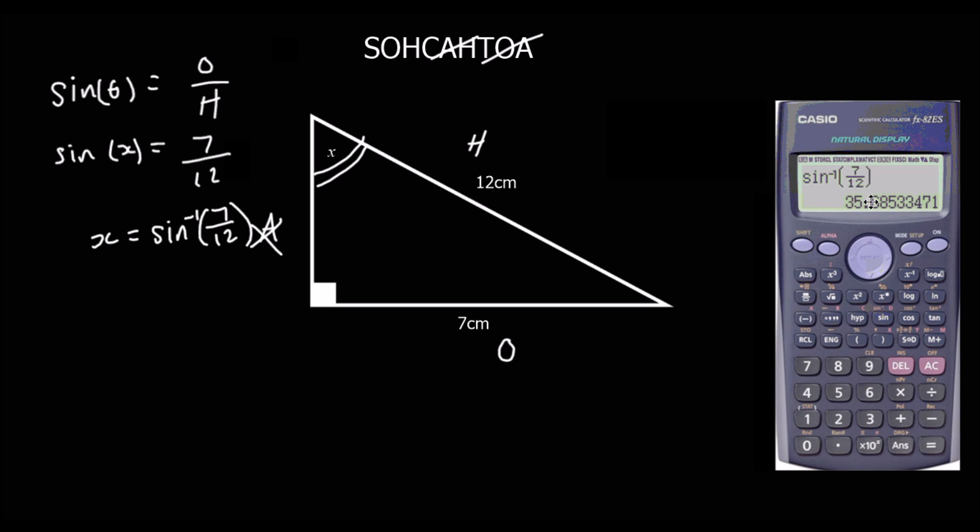Shifts in, and then in the bracket, 7 over 12. Using the fraction button here, I'm going to write 7 over 12. It shifts in 7 over 12 in the calculator, and that's giving us 35, let's do 1 decimal place here, 35.7 degrees.